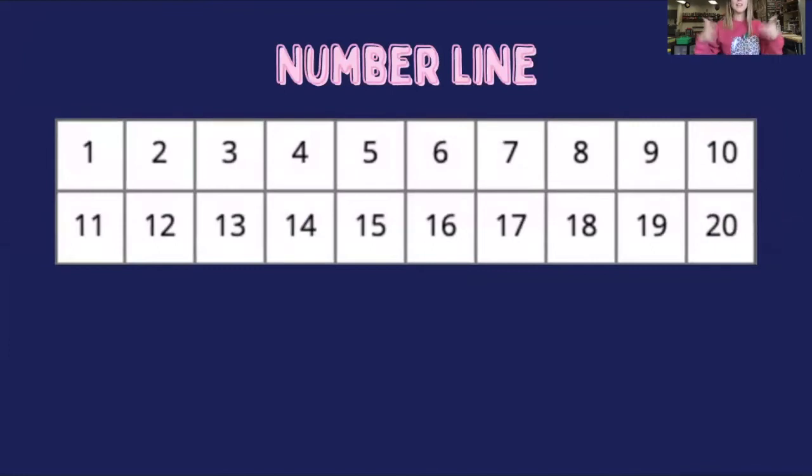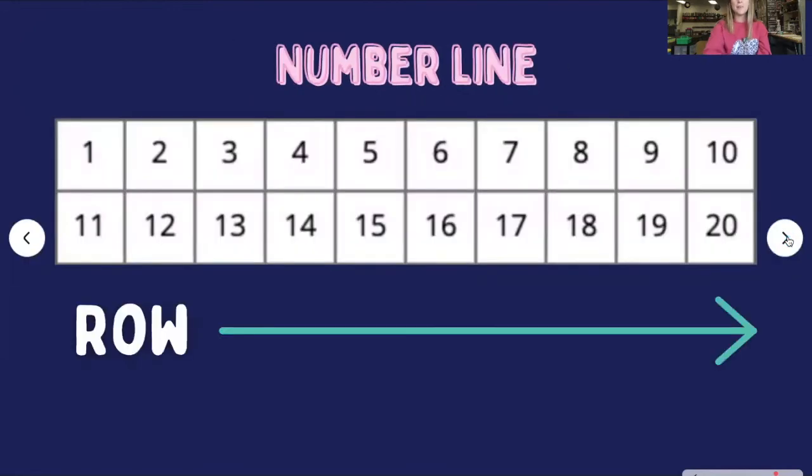So to count forward with a number line, you need a number line like this. This number line starts at the number one and ends at the number 20. Number lines are made up of something that we call rows. Can you say that word with me? Ready? Rows. A row is made up of numbers that are side by side going from left to right. Can you take your finger and swipe the top row? You should have started at the number one and swiped all the way to the number 10. Now can you swipe the bottom row? You should have started at the number 11 and swiped all the way to the number 20. This number line has two rows.